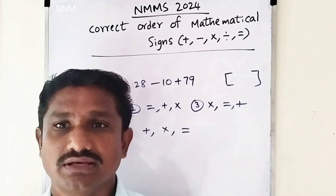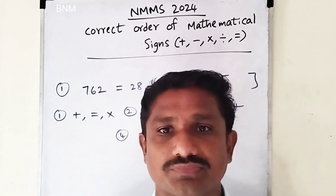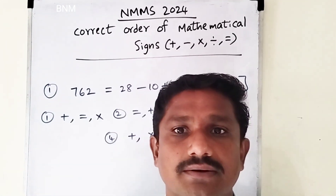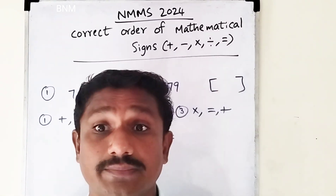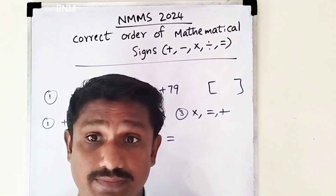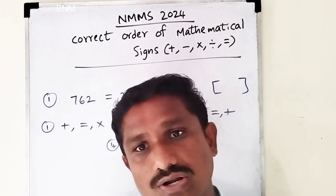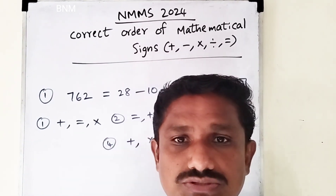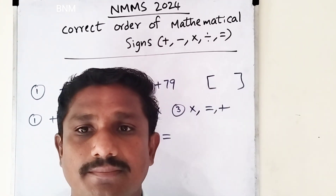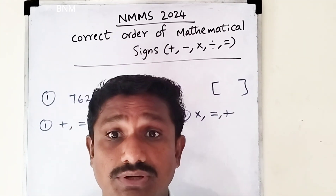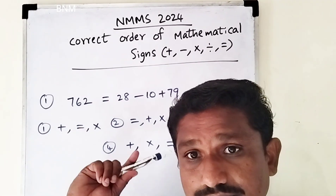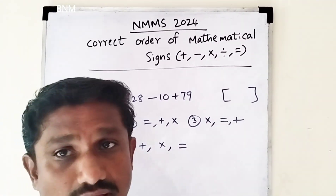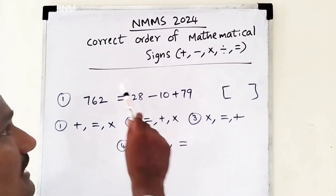Hi students! This is NMMMS2024 Missing Number Number Series. Arithmetical Calculation in the channel. I will try to practice this video. Mental Ability Test, Fourth Part: Correct Order of Mathematical Science. We are doing numbers.